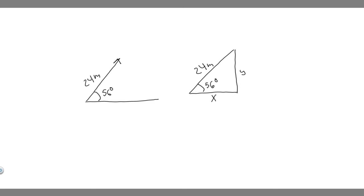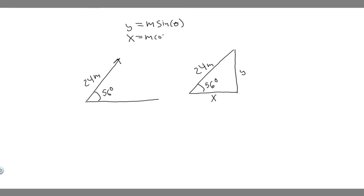So how do we solve for it? You're going to use trig to solve these, but there are specific formulas you should memorize because you'll be able to solve it really fast. The formula for the y component is y equals the magnitude times the sine of the angle. And for the x, it's x equals the magnitude times the cosine of the angle.